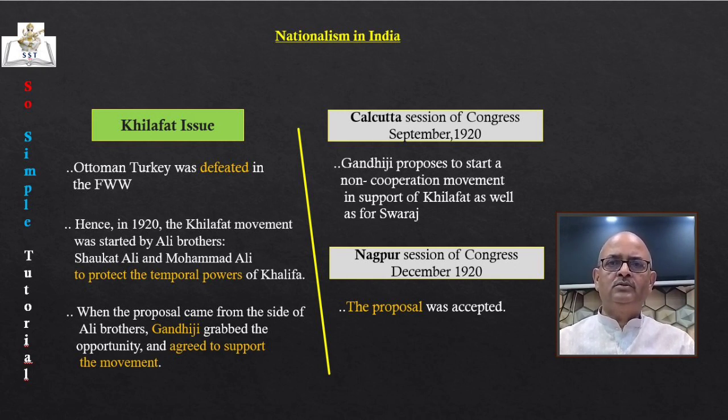The Sultan was both the political head of Turkey and the religious head of all Muslims in the world. Therefore, Muslims in India wanted to bring pressure upon the British to change its policy towards Turkey and be more liberal towards the Khalifa. Hence in 1920, the Khilafat Movement was started by Ali Brothers — Shaukat Ali and Muhammad Ali — to protect the temporal powers of the Khalifa. They discussed with Gandhiji the possibility of united mass action.